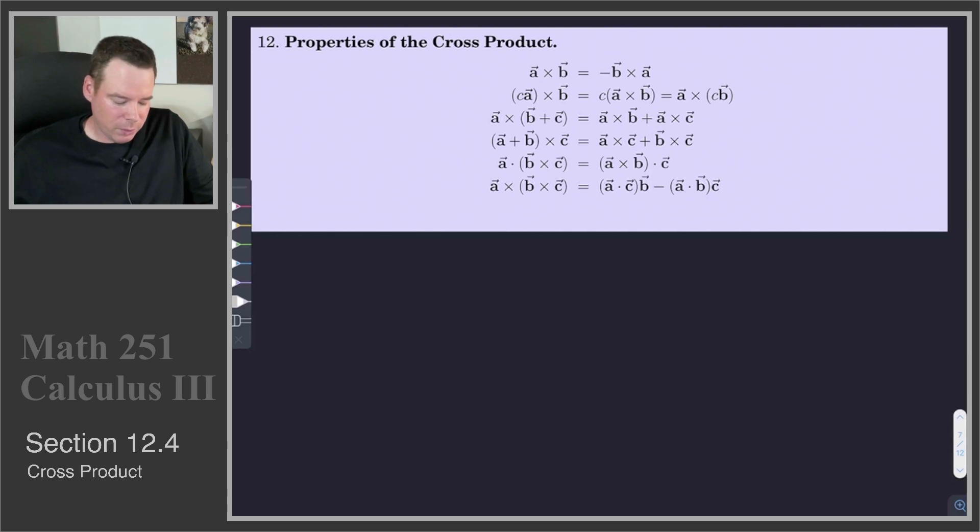If I scalar multiply one of the vectors, I could scalar multiply A by C, or scalar multiply the cross product by C, or scalar multiply the other vector by C. It doesn't matter where I put the scalar in terms of computing the cross product.